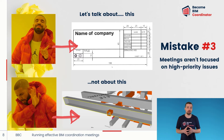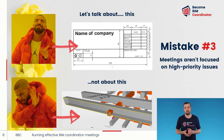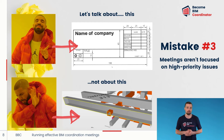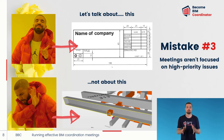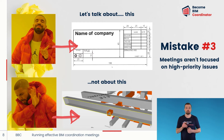Mistake number three: meetings which aren't focused on high priority issues and drag on for too long. I've attended many BIM coordination meetings as both a facilitator and a participant. It's too easy to move from discussing high priority issues to meaningless conversations about less important things. On more than one occasion, we went from discussing critical design changes to architects and specialists arguing about line thicknesses in drawing tables. Remember that there is a specific purpose to a BIM coordination meeting — to bring the right people together to discuss and solve important problems that have a real impact on the success of the project. Your role as a BIM coordinator is to keep the meeting on track and focused on what's important.